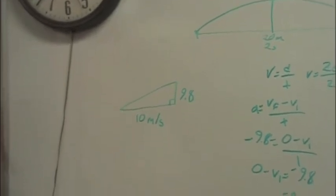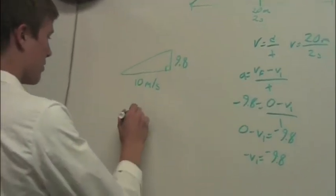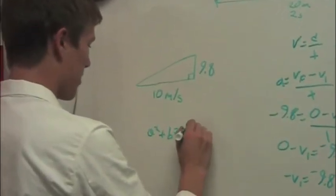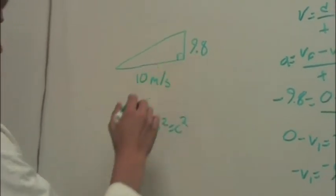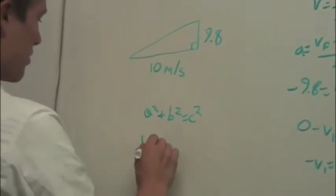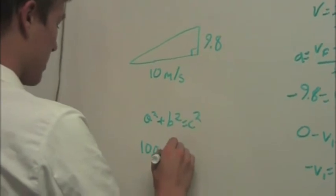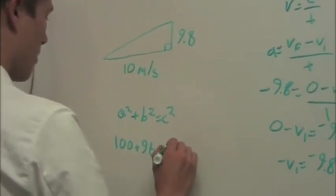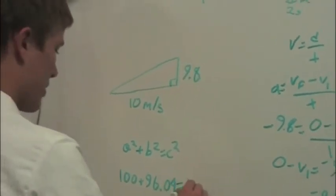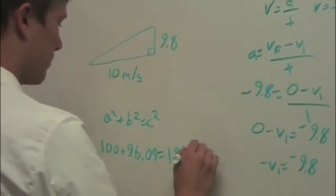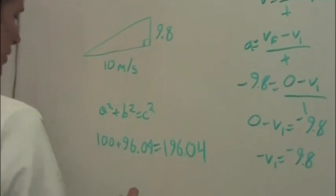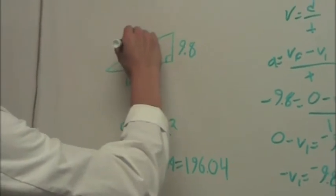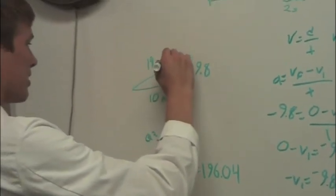Now we just use the Pythagorean theorem — A squared plus B squared equals C squared — and add these two sides together. We get 100 plus 96.04 equals 196.04. The square root of 196.04 is about 14 meters per second. So the ball was launched at 14 meters per second by Tanner.